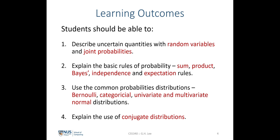By the end of today's lecture, you'll be able to define random variables and joint probabilities, and use them to describe uncertain quantities. We'll look at the basic rules of probabilities that will lay the foundation for the rest of the module. We'll also look at some common probability distributions that help us describe discrete and continuous random variables, and finally explain the use of conjugate distributions.